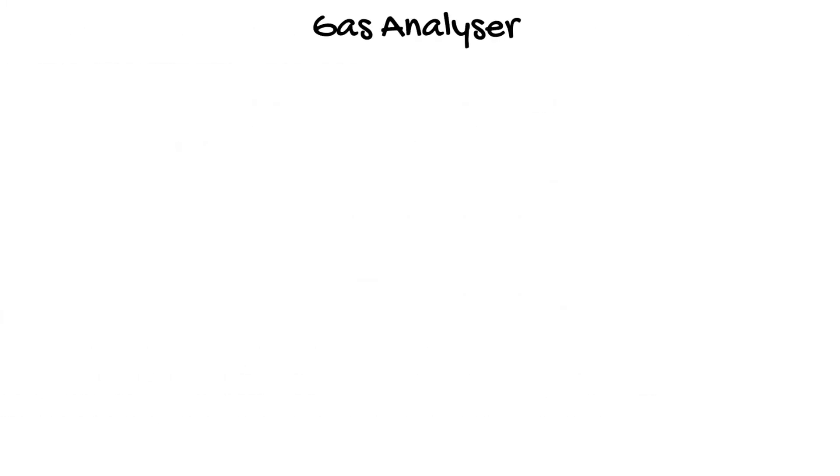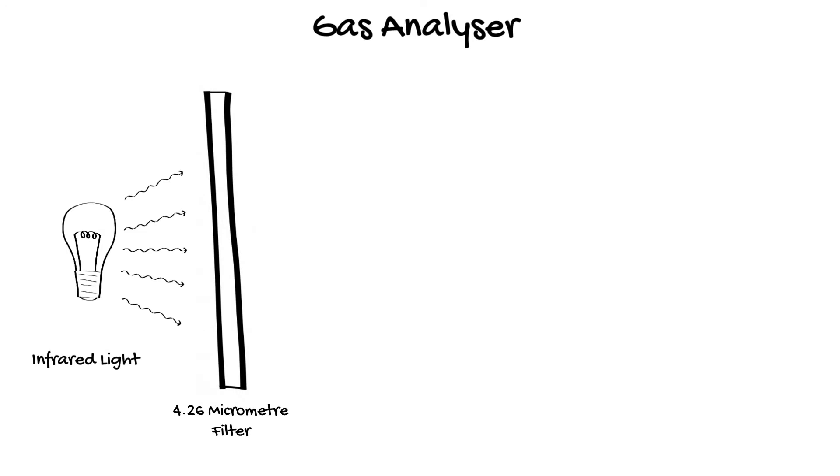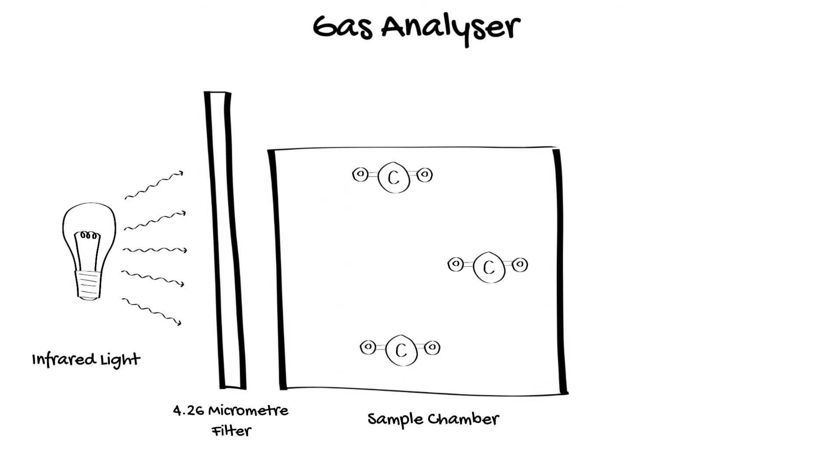The analyser consists of an infrared light source with the waves passing through a filter to allow the passage of only 4.26 micrometre wavelength light. This then passes through the sample chamber of expired gas with absorption of the 4.26 micrometre light being proportional to the concentration of carbon dioxide in accordance with Beer's law which we've discussed in the previous pulse oximetry video. Of note, the sampling chamber cannot be made of glass as this absorbs infrared light so a sapphire crystal window is used in the sample chamber.